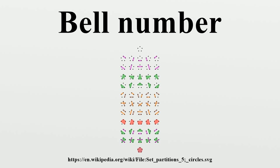If a number n is a square-free number, then BN gives the number of different multiplicative partitions of n. These are factorizations of n into numbers greater than 1, treating two factorizations as the same if they have the same factors in a different order. For instance, 30 is the product of the three primes 2, 3, and 5, and has five factorizations.